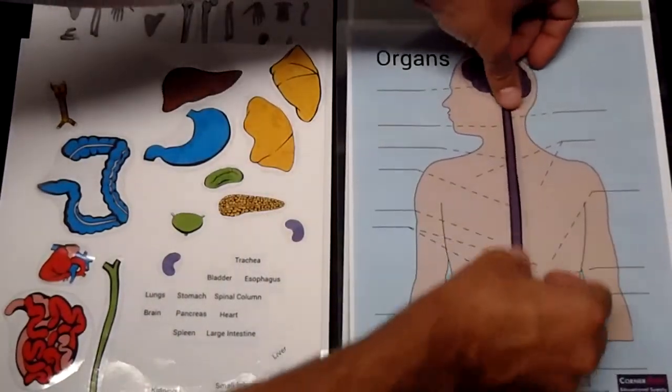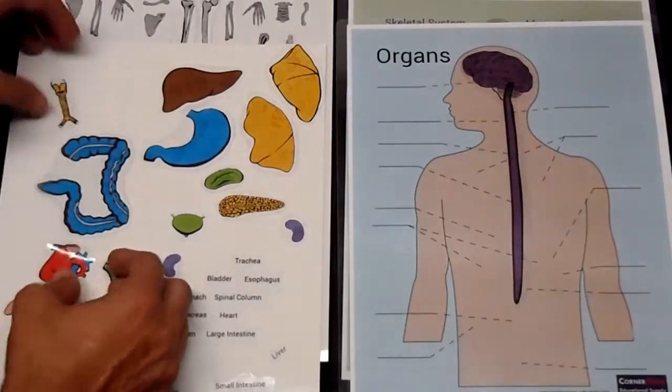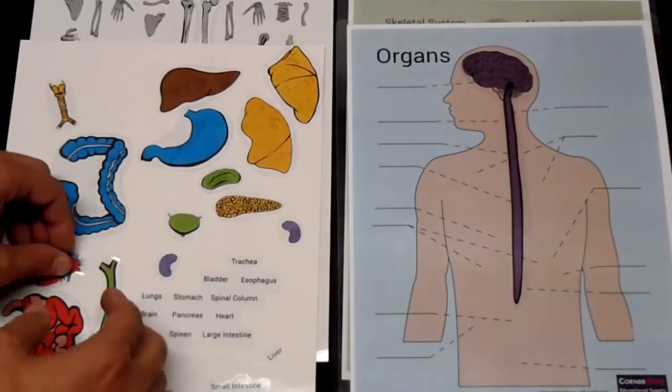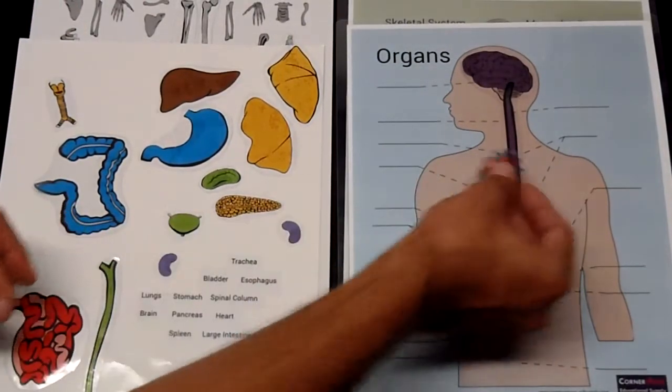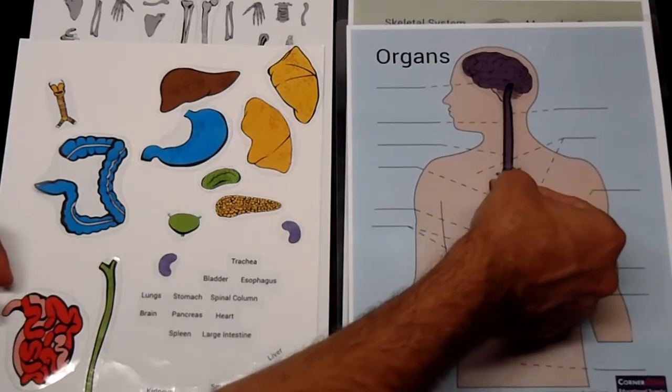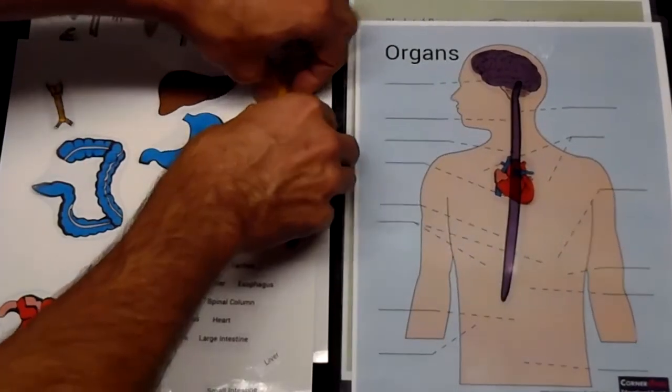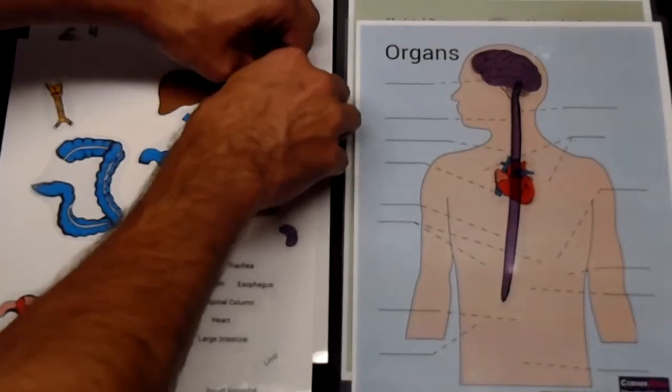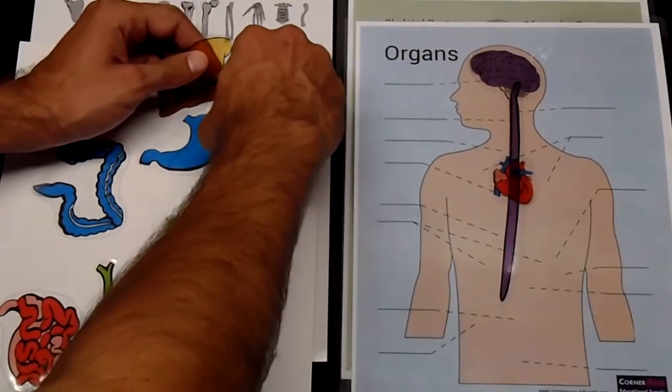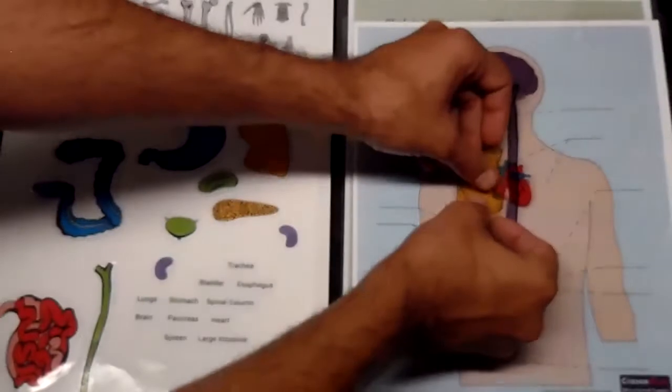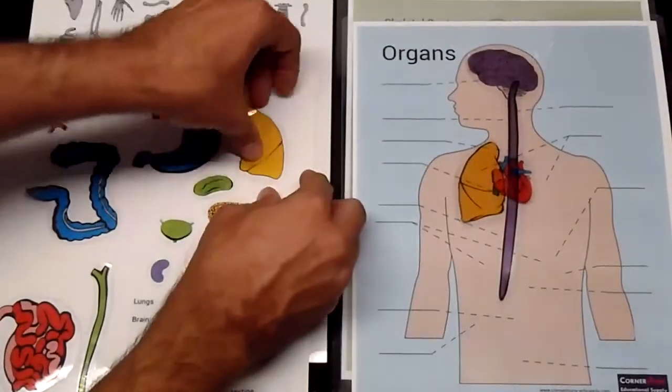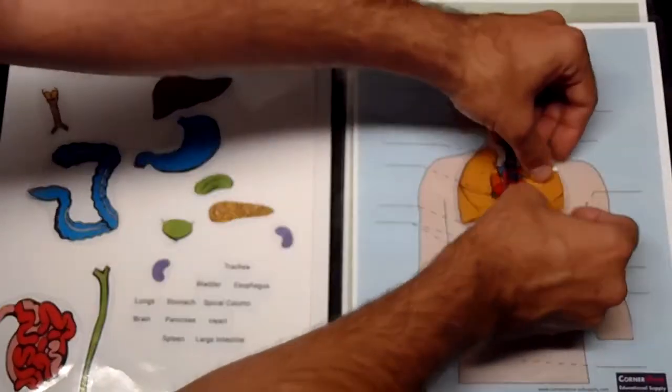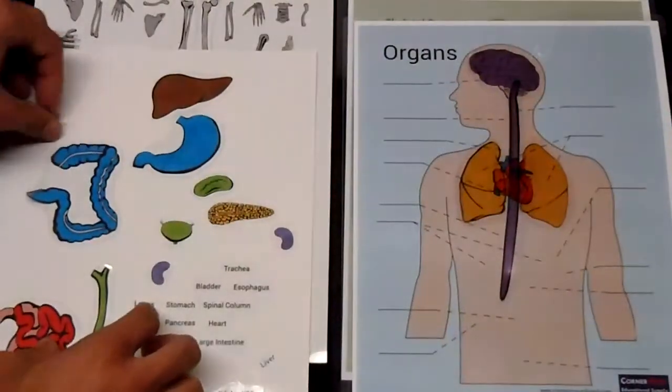And the cool thing about these stickers, as we keep on going, is that they get layered and they get a sense of what organs are found in front of and behind other organs in the body. So if we're looking at where the heart is, the heart is surrounded on all sides by the lungs. And so we get our lung set there, just kind of overlapping the heart just a little bit.